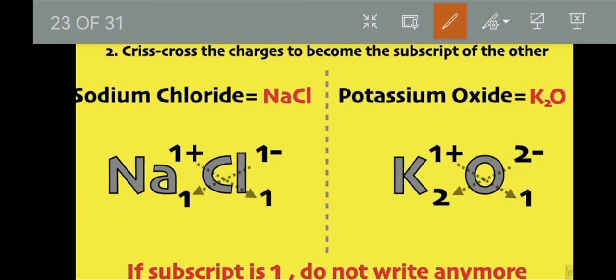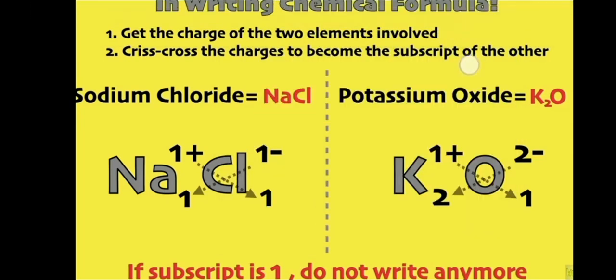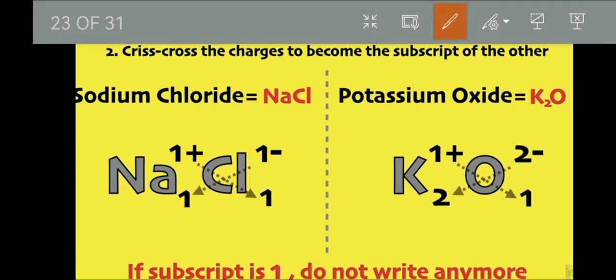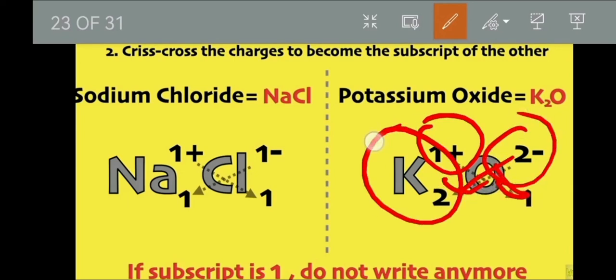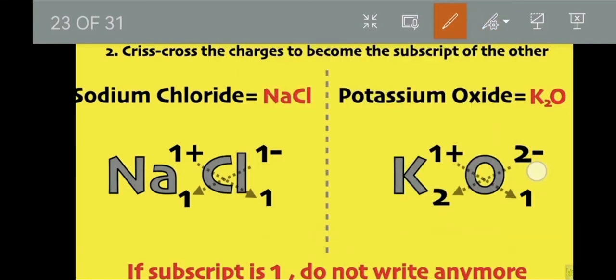How about potassium oxide? In potassium oxide, potassium is 1 plus and oxygen is 2 minus. So when we crisscross them, potassium will have 2 and then oxygen will have 1. Remember, we do not write 1 anymore. We write it just as K2O.